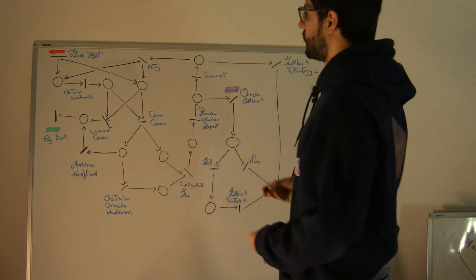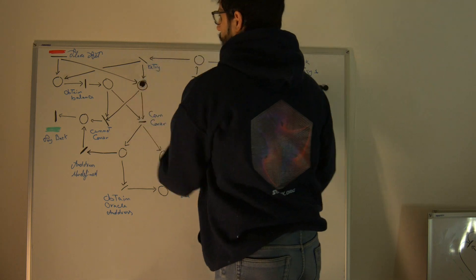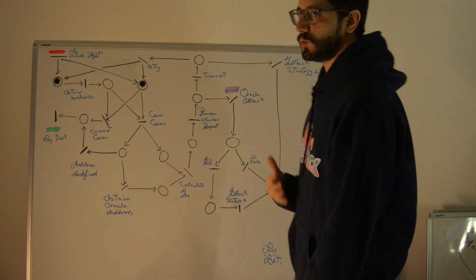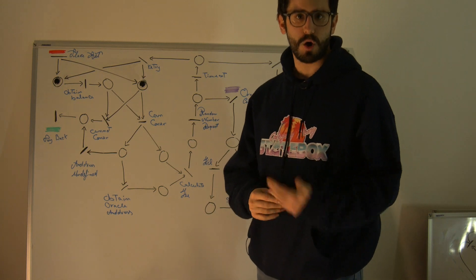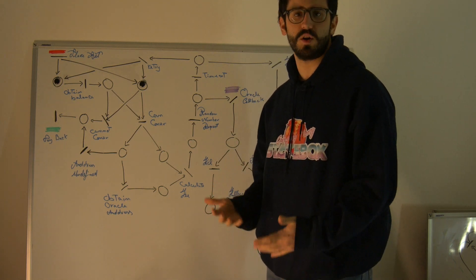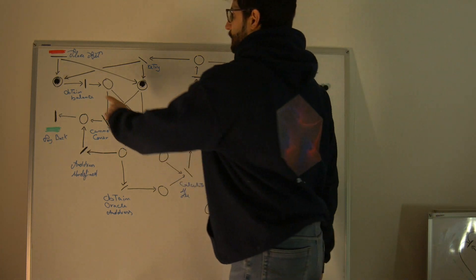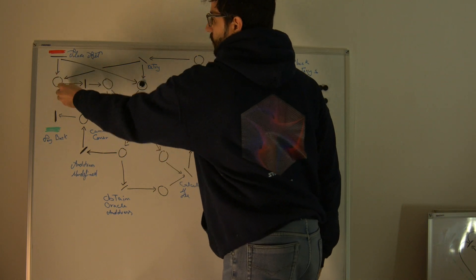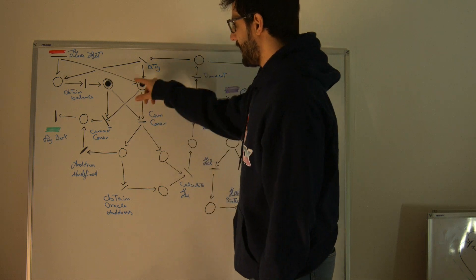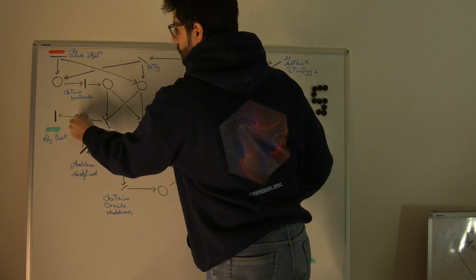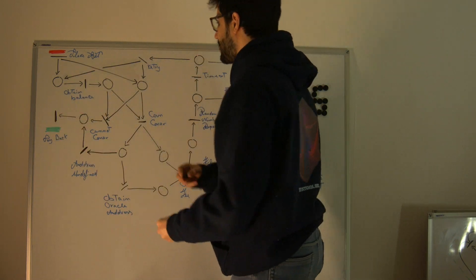So let's suppose that a user places a bet, and two tokens appear here. Now what we have to do is check if the bet can be covered or not - if we have enough money on the contract to pay the user back in case the user wins. To do this we need to obtain the contract balance first. And then either we cannot cover the bet and we go here and pay the user back with the money that they bet, or we can.